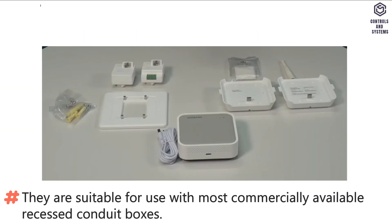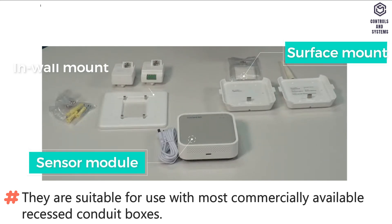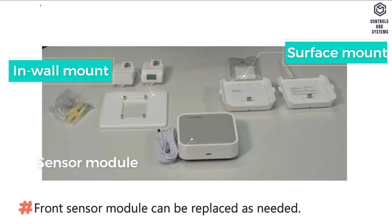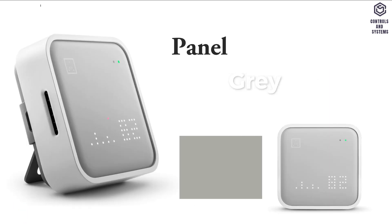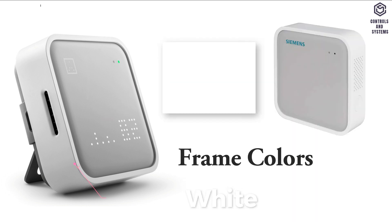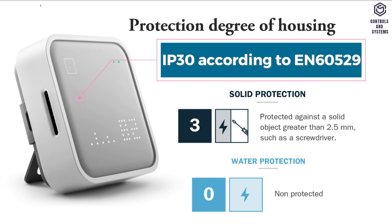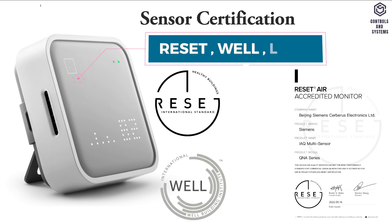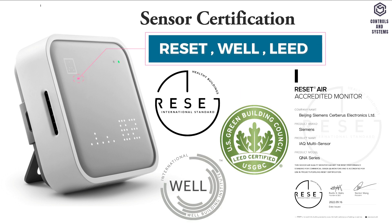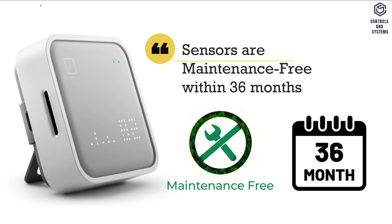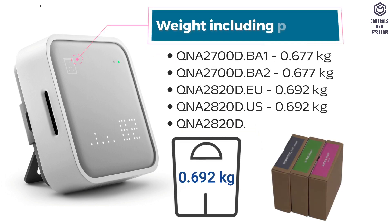The device has three parts: Sensor Module, Surface Mount, and In-Wall Mount. The front Sensor Module can be replaced as needed. Material data: Panel color is gray, frame color is white, protection degree of housing is IP30. Sensors are maintenance-free within 36 months. Weight is 0.692 kg including package.